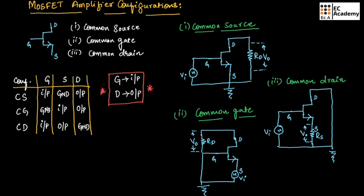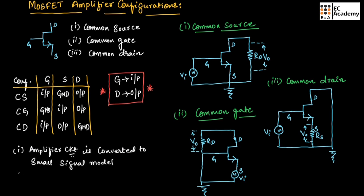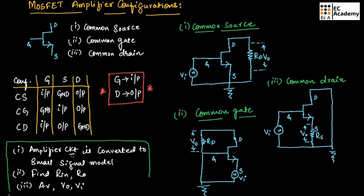Whenever we connect a MOSFET as an amplifier, there are three steps to remember. First, the amplifier circuit is converted into the small signal model. Second, we need to find the value of input resistance and output resistance. Third, we find the gain AV — in turn we can find the output voltage and input voltage. These are the three steps you need to follow for all amplifier configuration circuits.